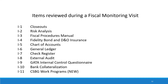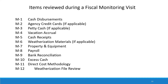This is an all-encompassing list of items we review during our fiscal monitoring visits. Some of these items are closeouts, review of your fiscal procedures manual, your chart of accounts, your general ledger, your external audit, and your bank collateralization. We also review cash disbursements, cash receipts, property and equipment, bank reconciliation, and excess cash. We ask that you keep this list on hand so you're aware of the items we're going to be looking at prior to our review.